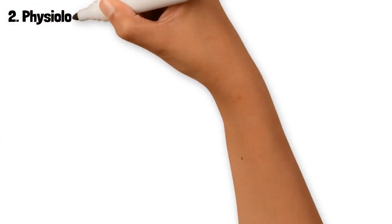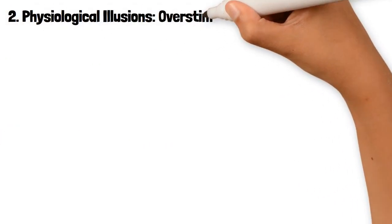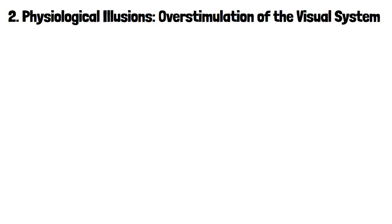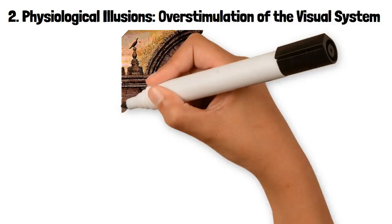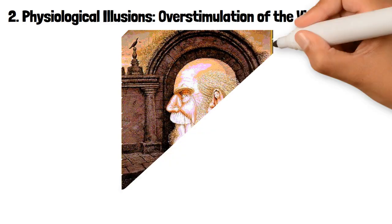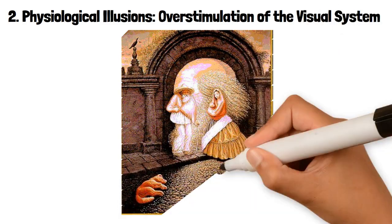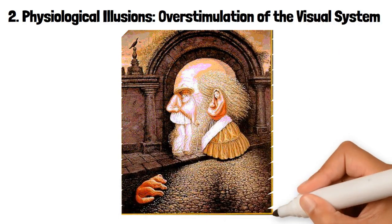2. Physiological Illusions: Overstimulation of the Visual System. Physiological illusions occur when the eyes or brain are overstimulated by certain patterns, light, or colors, leading to a visual distortion.